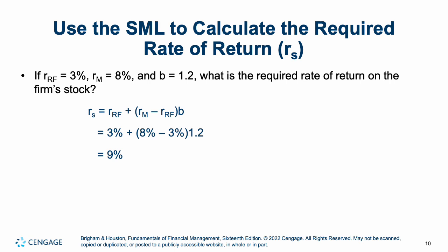What if we want to use the security market line to calculate the required rate of return? If our risk-free rate is 3%, our market return is 8%, and beta is 1.2, we start with the risk-free rate and add the risk premium — the market rate minus the risk-free rate, multiplied by beta. If beta is 1, it equals the market risk premium exactly; lower than 1 is less risky; greater than 1 is more risky. This stock has a beta of 1.2, making it riskier than the overall market, giving a required rate of return of 9%.